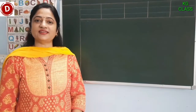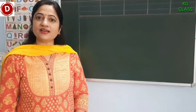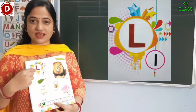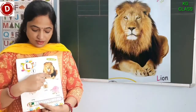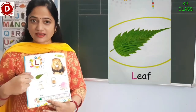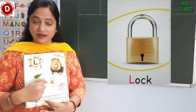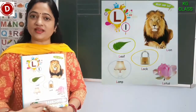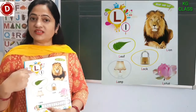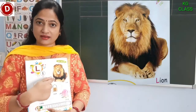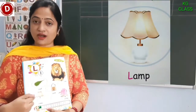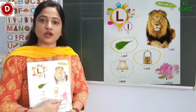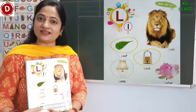Today I will teach you to write capital L. But before that, let's look at some pictures. Children look here, this is capital L. L for lion, L for leaf, L for lamb, L for lark, and L for lotus. There are so many things which start with letter L. I hope now you are able to understand these things and recognize them also.